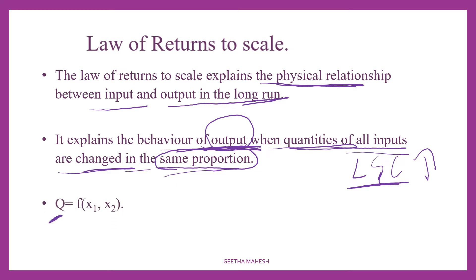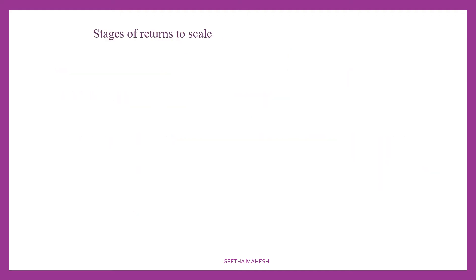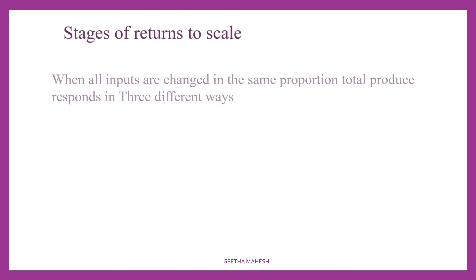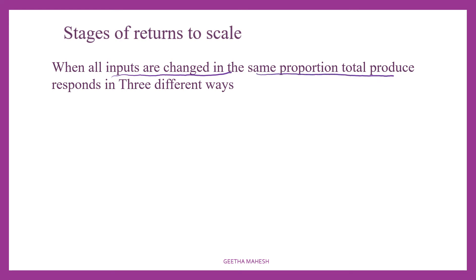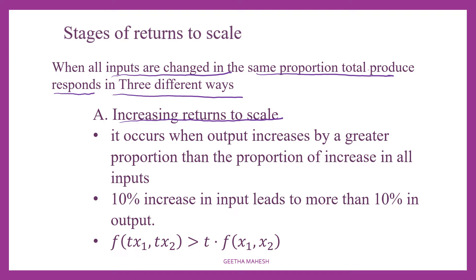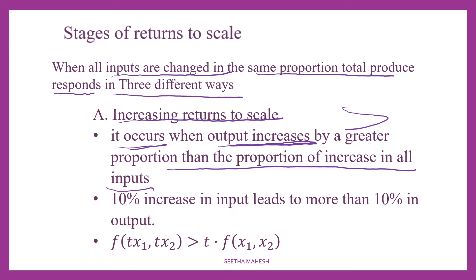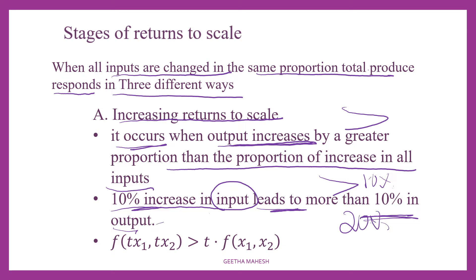The quantity of output is a function f of x1, x2. The first stage is increasing returns to scale. It occurs when output increases in a greater proportion than the proportion of increase in all inputs. That means a 10% increase in input leads to more than 10% increase in output — for example, a 20% increase in output. Output increases greater than the increase in input.